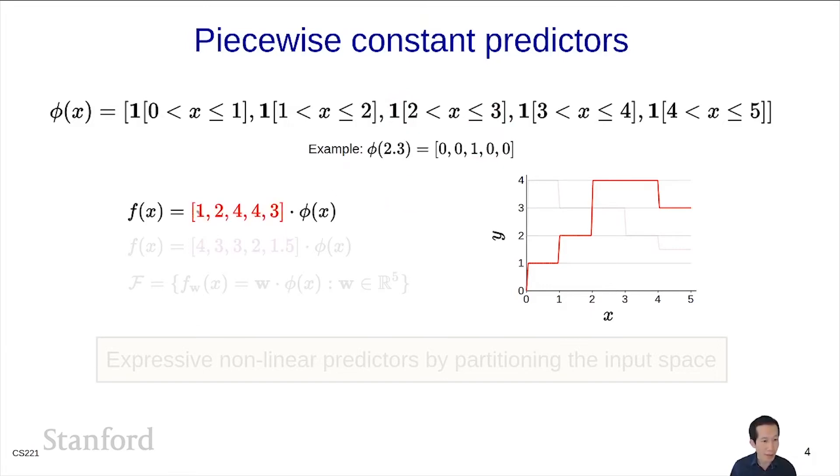If I set the weight vector corresponding to [1, 2, 4, 3], then I get this function. Notice that each weight is just identifying the function value of that region. So between 0 and 1, the function is at 1, then it's 2, then it's 4, and then it's 3. Here's another one. It's 4 and then 3, 3 to 1.5. And in general, the set of predictors is w · φ(x) where w can range freely.